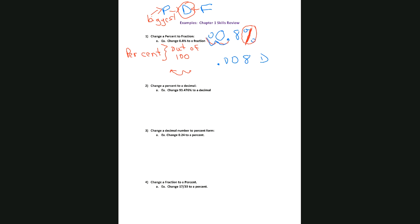Now let's change that to the fraction. Remember, we're thinking of decimal as our home base, but the question asked me to change it to a fraction. The way I change a decimal to a fraction is I basically read it. So .008 — the real way to read that would be to say that's eight one-thousandths. The way you know what the denominator is, you count how many places to the right that eight is, and that's how many zeros should be after the one. So you see that eight is three places to the right, so I put three zeros — 8 over 1000. Now I've got it changed to a fraction, but it's not in lowest terms. To change it to lowest terms, I need to divide by a common factor.